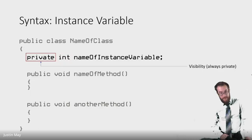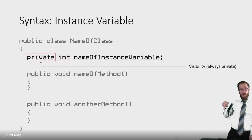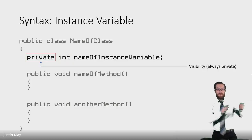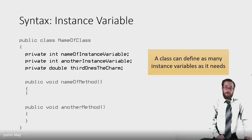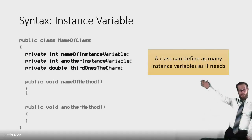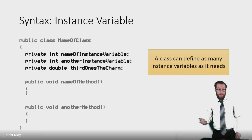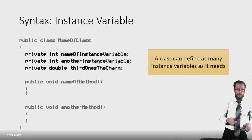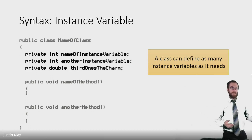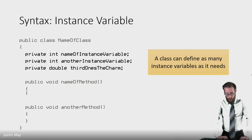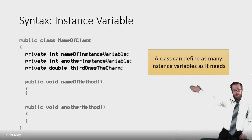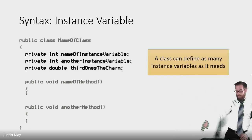Instance variables will always be private, so the declaration is: private, type, name of instance variable, semicolon. You can have as many instance variables as you need. Each instance variable needs a unique name; they might have the same types as each other or different types — whatever attributes this object needs, you just define them as instance variables. We usually put those at the top of our class all together, followed by all of the methods.